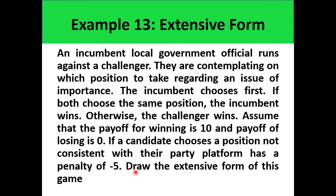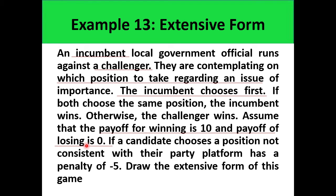Before we draw the extensive form, let's underscore some important information. The players are the incumbent and the challenger. They can choose to either go with the party or to go against the party. It is the incumbent who will make the decision first. If the incumbent and the challenger choose the same position, the incumbent wins. If they have different decisions, the challenger wins. The payoff of winning is 10, the payoff of losing is 0. However, if a candidate chooses against the party, he or she will have a penalty of minus 5.